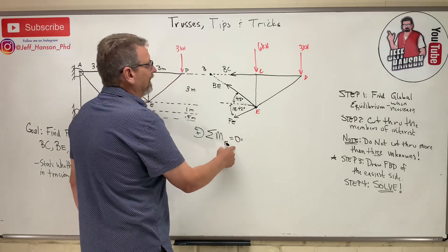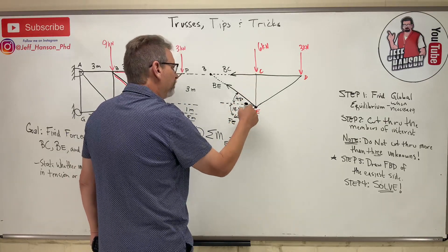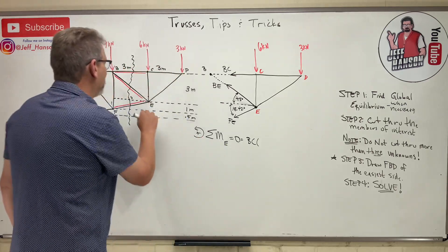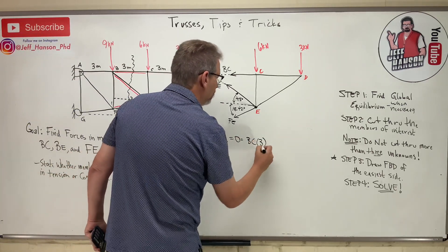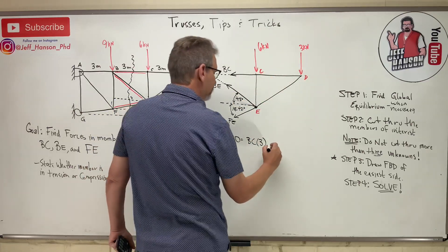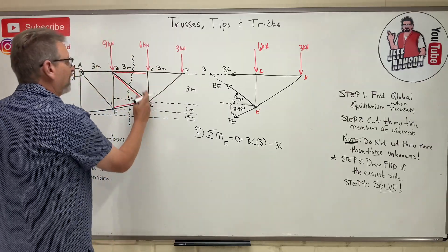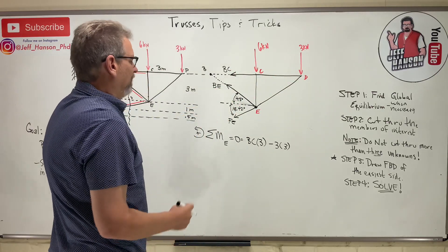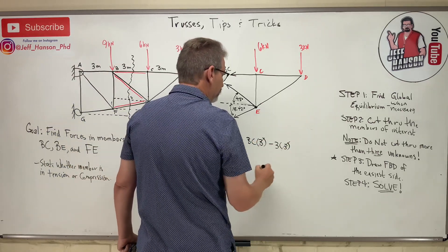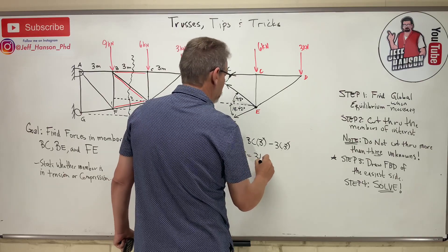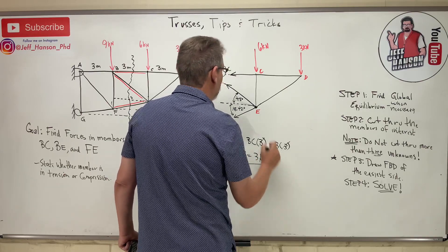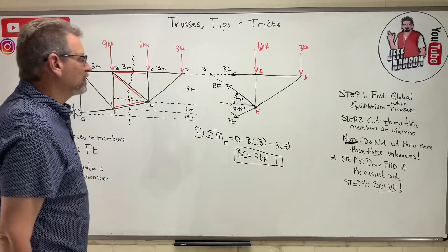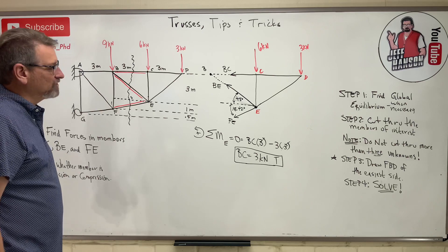All right. So I'm going to take the moment at E and what do I get? Well, actually the six kilonewton goes through point E as well. Those two guys are knocked out. So I get BC, which rotates positive, BC times how far away from E up to there is three. And then I got the three over there, which rotates me negative. So minus three times how far away is that guy? Three. If the force is in the Y, then the distance is in the X. The three, divide everything by three, BC equals three kilonewtons. And I drew him in tension. I got a positive answer, which means he really is in tension. If I would've got a negative answer, it meant he's actually in compression. How nice is that y'all? That's so easy.